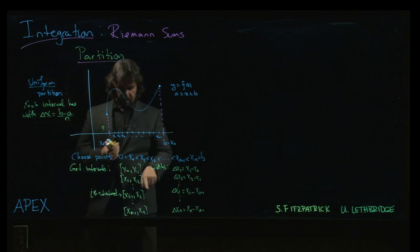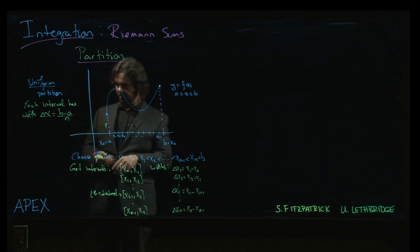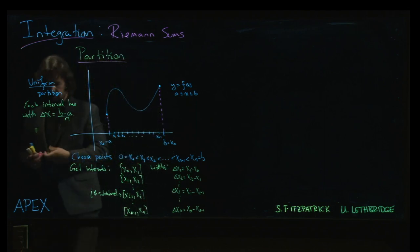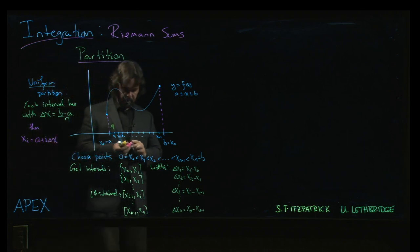Having done that, then you can, like we did in the last example, you can now actually give formulas for these points. What we get is that x sub i will be, we start at the initial point a, and then we add i times delta x. So i times this b minus a over n.